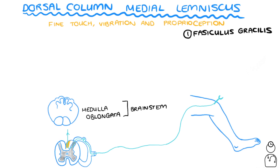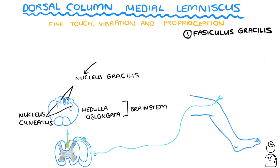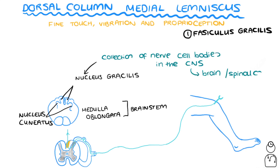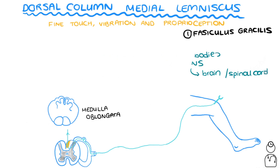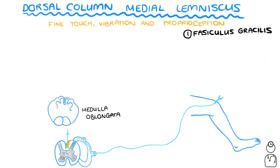The nerve enters the fasciculus gracilis to make its way up to the medulla oblongata in the brainstem. The medulla oblongata has two conveniently named nuclei: the medial nuclei are known as the nucleus gracilis, and the lateral nuclei are known as the nucleus cuneatus. In this context, a nucleus just means a collection of nerve cell bodies in the central nervous system. Since this is the fasciculus gracilis pathway, this nerve goes to the nucleus gracilis, where it will terminate by synapsing with another nerve. This nerve has carried information from the periphery to the brainstem, making it a first-order neuron.